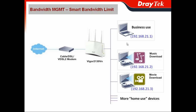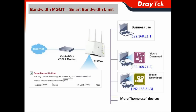In this scenario, under the LAN network of the Vega 2130 series, you have a device for business use and several devices for home use, such as music download, movie download, and more. Ideally, you would like to give bandwidth reservations to all devices. However, that takes too much time — so we have Smart Bandwidth Limit.